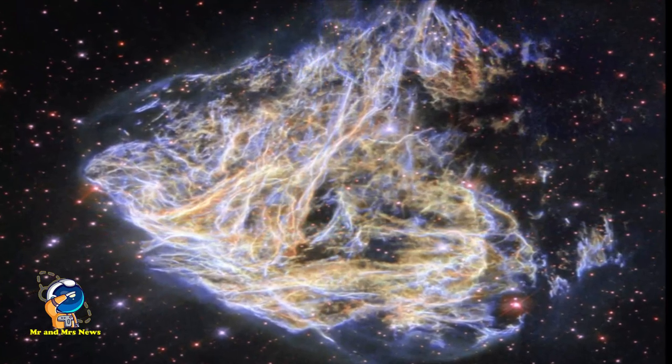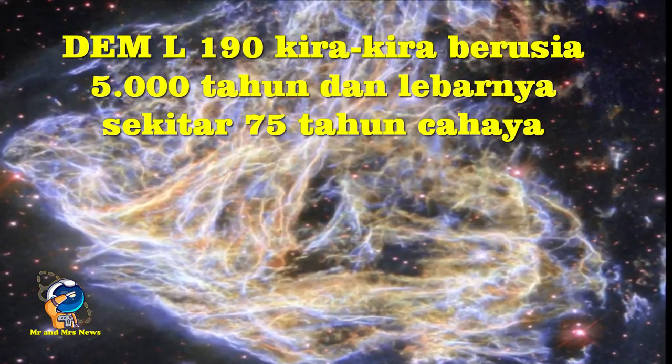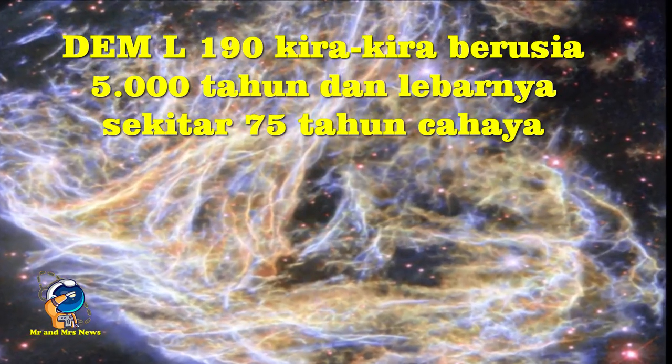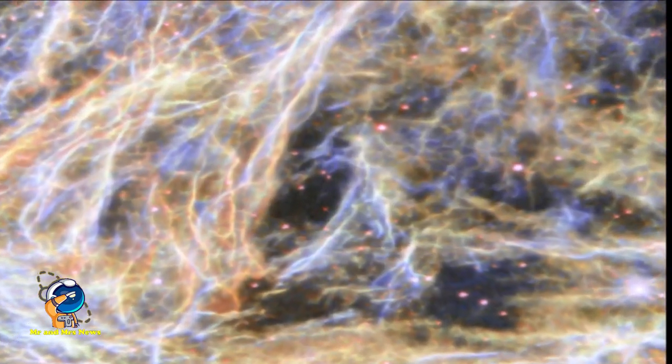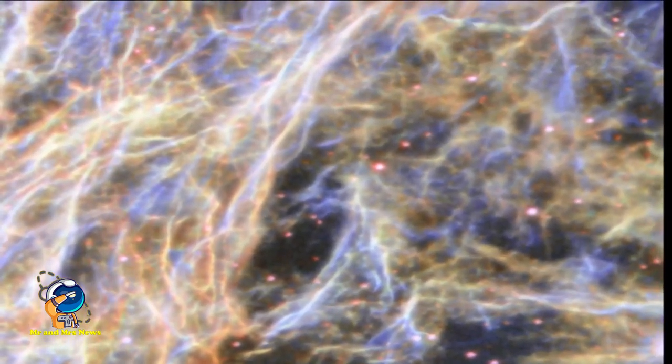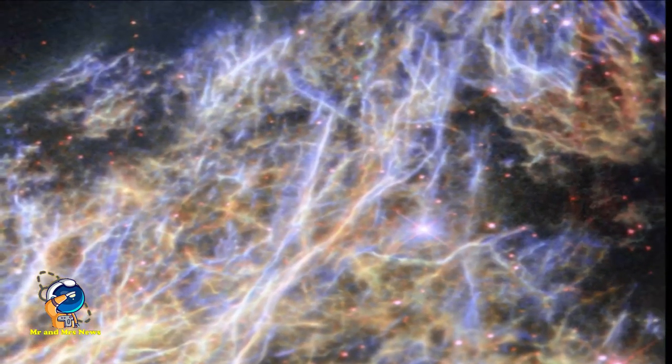DEM L190 kira-kira berusia 5,000 tahun dan lebarnya sekitar 75 tahun cahaya. Inti bintang asli yang terletak jauh di dalam awan gas ini adalah bintang neutron yang berputar dengan kecepatan 1 revolusi setiap 8 detik.